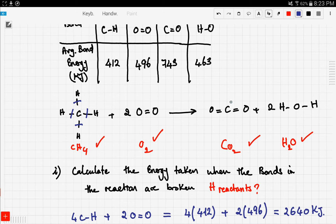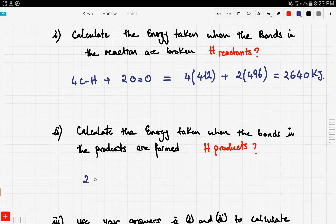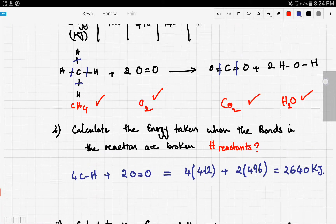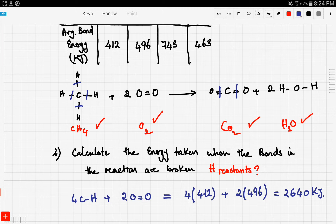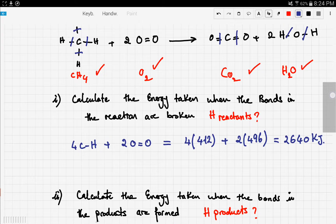So we have two CO bonds. So we write two CO bonds plus, now take a look at this. We have two OH bonds and two moles of that. So we have two into two into four, six, three, okay? Which is how much the HO bond is worth, okay?